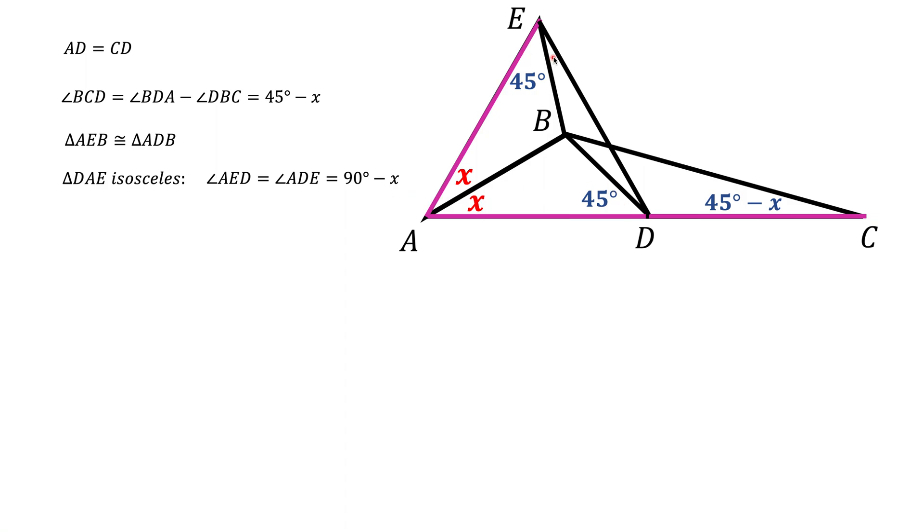Now if you look at this big angle E, part of it is 45 degrees, the whole angle is 90 minus X, therefore this portion is going to be 45 minus X.